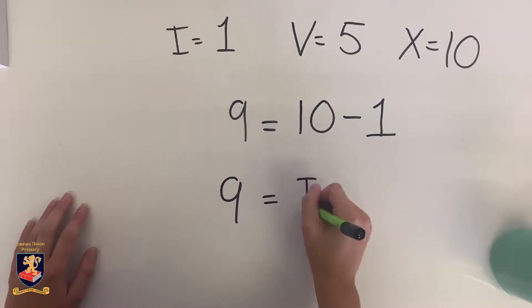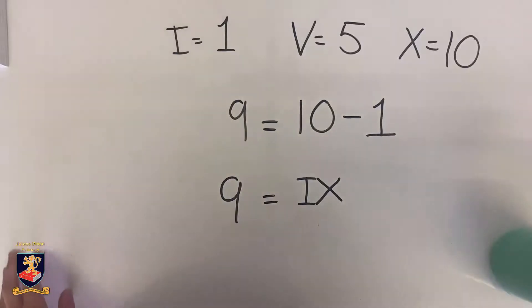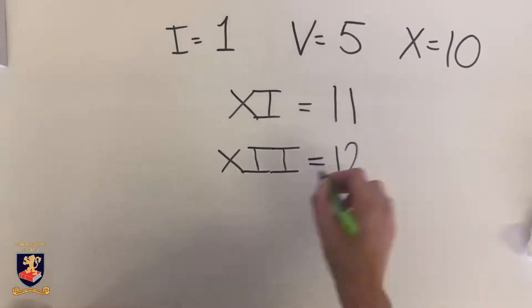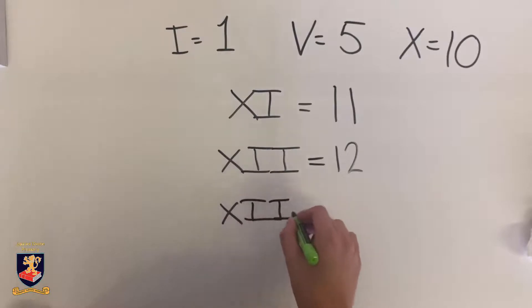For numbers greater than ten, we're going to start with ten. We say XI for eleven, XII for twelve (two more than ten), and XIII for thirteen (three more than ten).